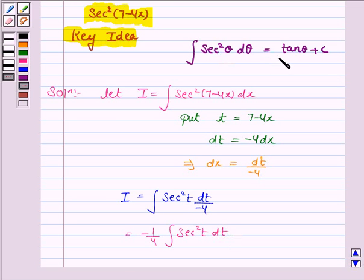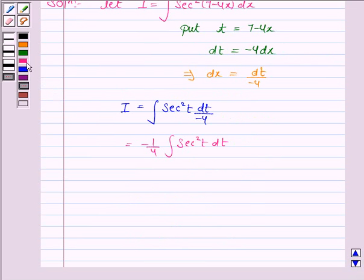And we know that its integral is tan theta if we have secant square theta d theta. Its integral is tan theta plus c. So this becomes minus 1 by 4 tan t plus c.